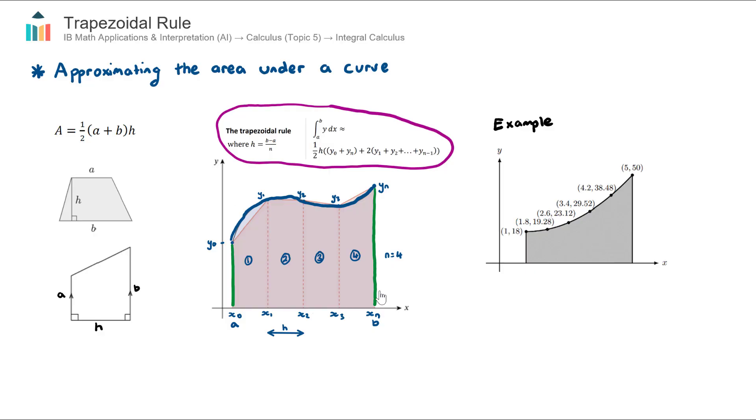And then we close that bracket plus two times, and all of these y values here are the internal heights. So for example this would be y1, this would be y2, this would be y3 and so on. Now the formula has dot dot dot because it doesn't know how many trapezoids you have. You could have three, you could have a hundred, so it just says we'll just add up all of the internal heights.